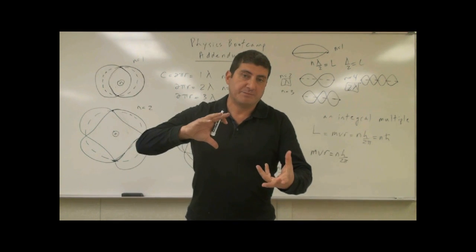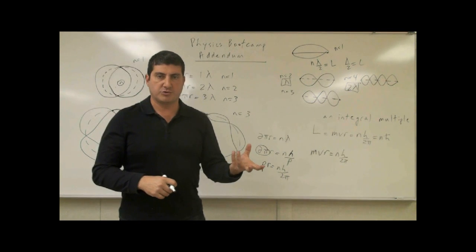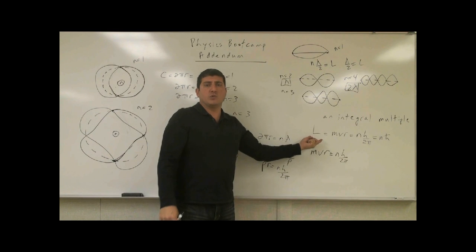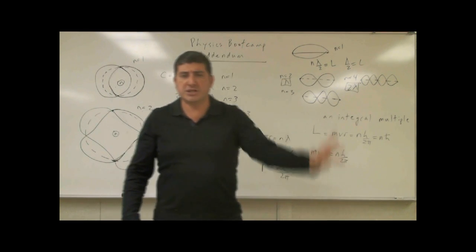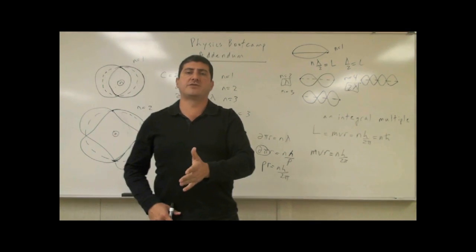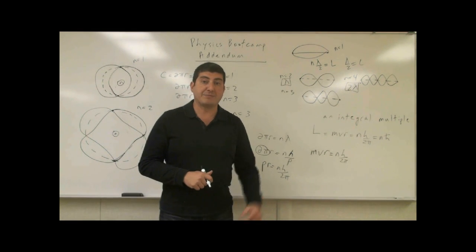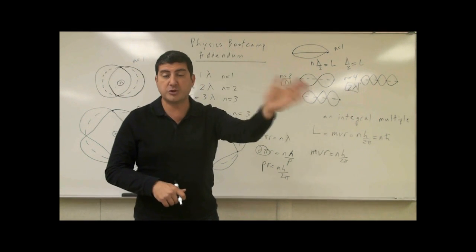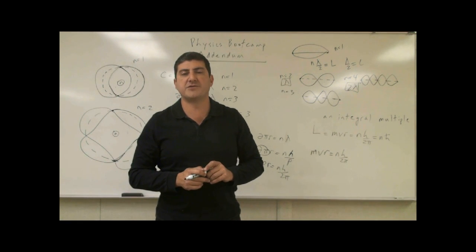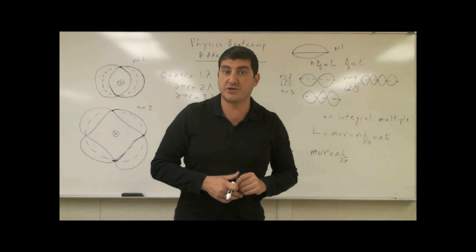So de Broglie's theory leads to Bohr's theory. Once we conclude that angular momentum is quantized, we can calculate the energy of the electron and show that energy is also quantized. From there we can calculate what happens when the electron jumps from one orbit to another — it releases a certain photon — and we can predict the spectral lines of hydrogen and other atoms.